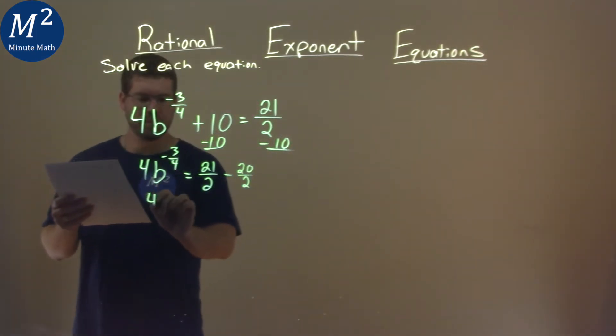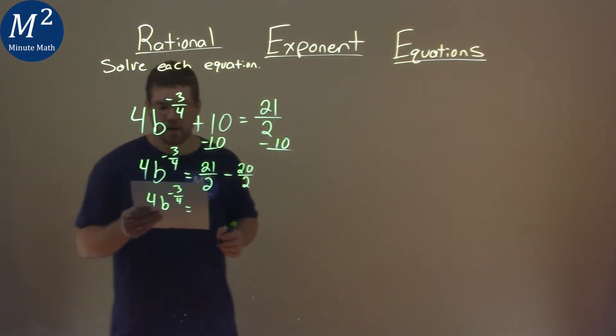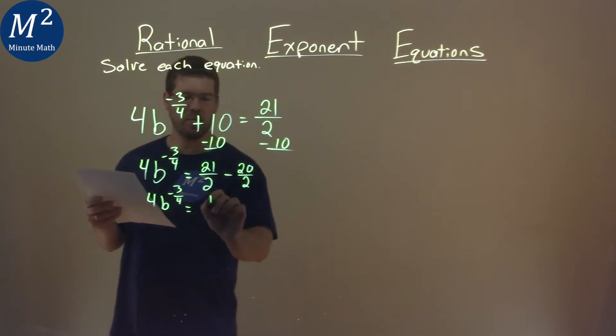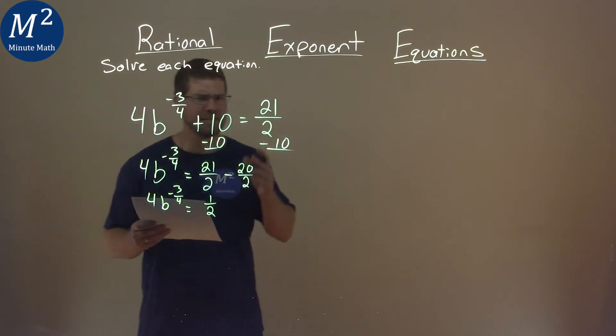Keep on going. We have 4b to the negative 3 fourths power, and 21 over 2 minus 20 over 2 is just 1 half. That's a little easier to deal with.